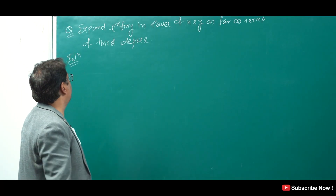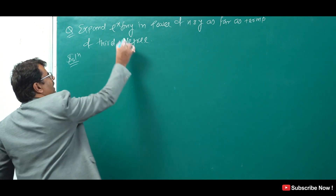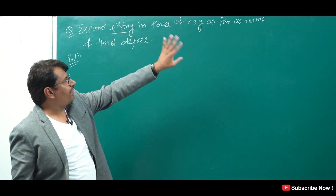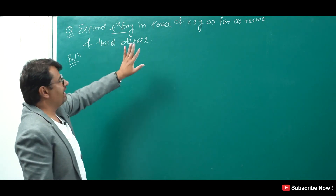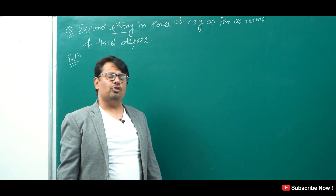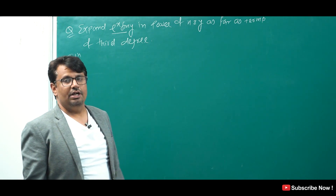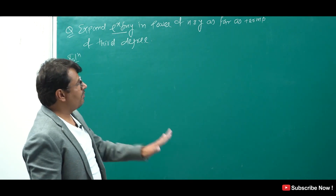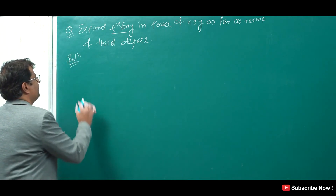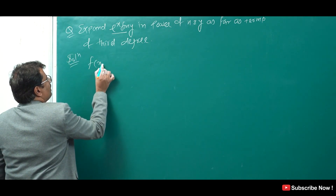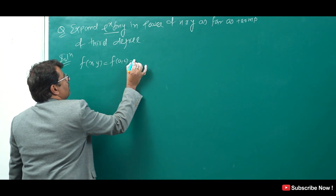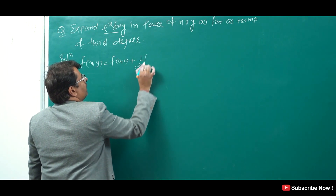I will tell you a question: Expand e to the power x sin y in powers of x and y as far as terms of third degree. So the point is (0, 0), and we will use the concept of the McLaurin series. We know the statement of the series.